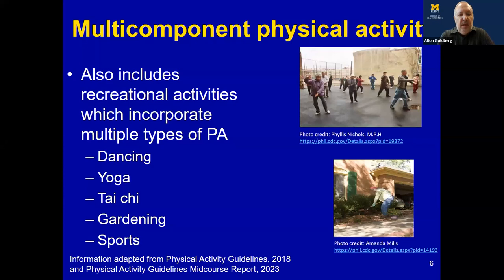Yoga also has strength benefits and balance and coordination benefits. Tai Chi as well can help with balance. Activities such as gardening — we typically don't think of that as exercise, but it falls under the category of physical activity — have benefits in terms of strength, mobility, balance, and aerobic conditioning depending on the effort put in.